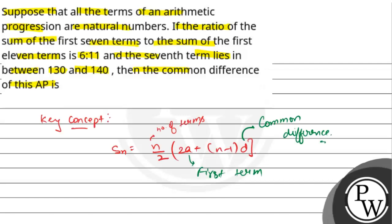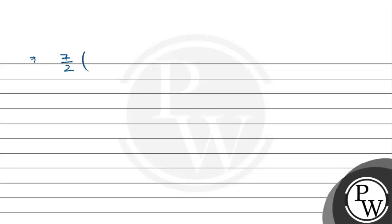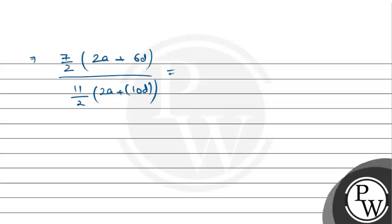तो अब इस question को solve करते हैं। Question में क्या बोला गया है? Arithmetic progression में all terms natural numbers हैं। If the ratio of sum of first 7 terms to the sum of first 11 terms is 6:11. तो 7 terms के लिए n = 7: (7/2)(2a + 6d), divided by 11 terms के लिए (11/2)(2a + 10d), यह ratio 6/11 दी है।